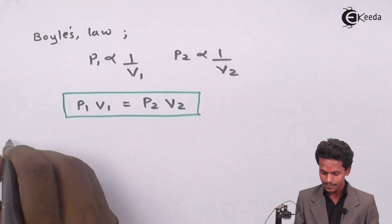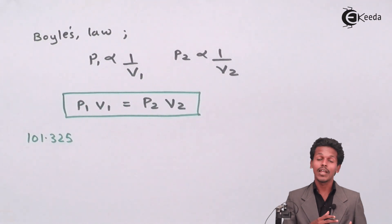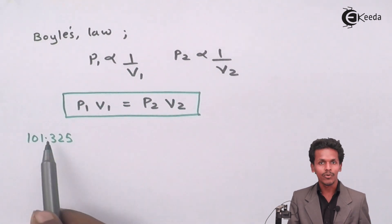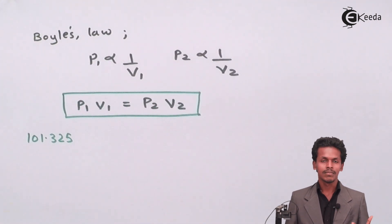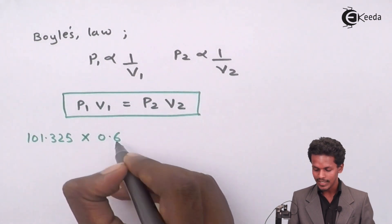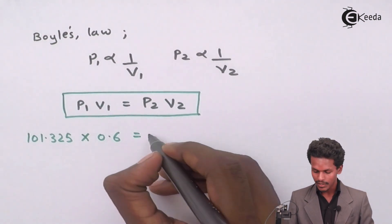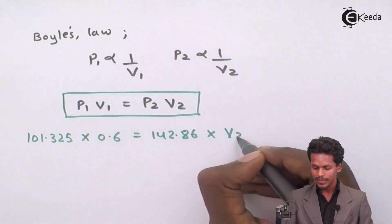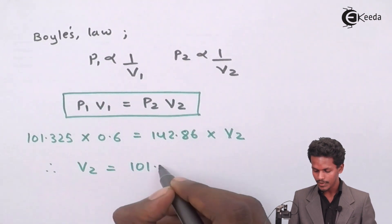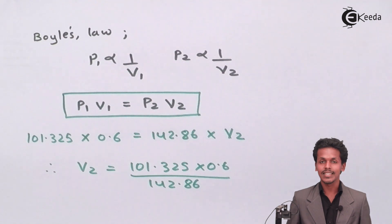We will now substitute the given values into the formula. P1 = 101.325 kPa, V1 = 0.6 dm³, and P2 = 142.86 kPa. Since both pressures are given in kPa, no unit conversion is needed. So we can write: V2 = (P1 × V1) / P2 = (101.325 × 0.6) / 142.86. Let us calculate and see what answer we get.